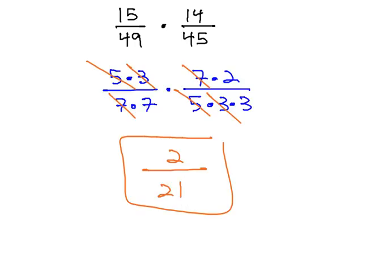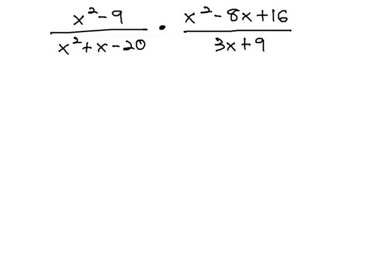We can follow the same pattern as we multiply rational expressions with reducing as well. x squared minus 9 over x squared plus x minus 20 times x squared minus 8x plus 16 over 3x plus 9. Before we multiply, we like to reduce. However, we can only reduce if it's factored first, and so we will need to factor each of these polynomials.